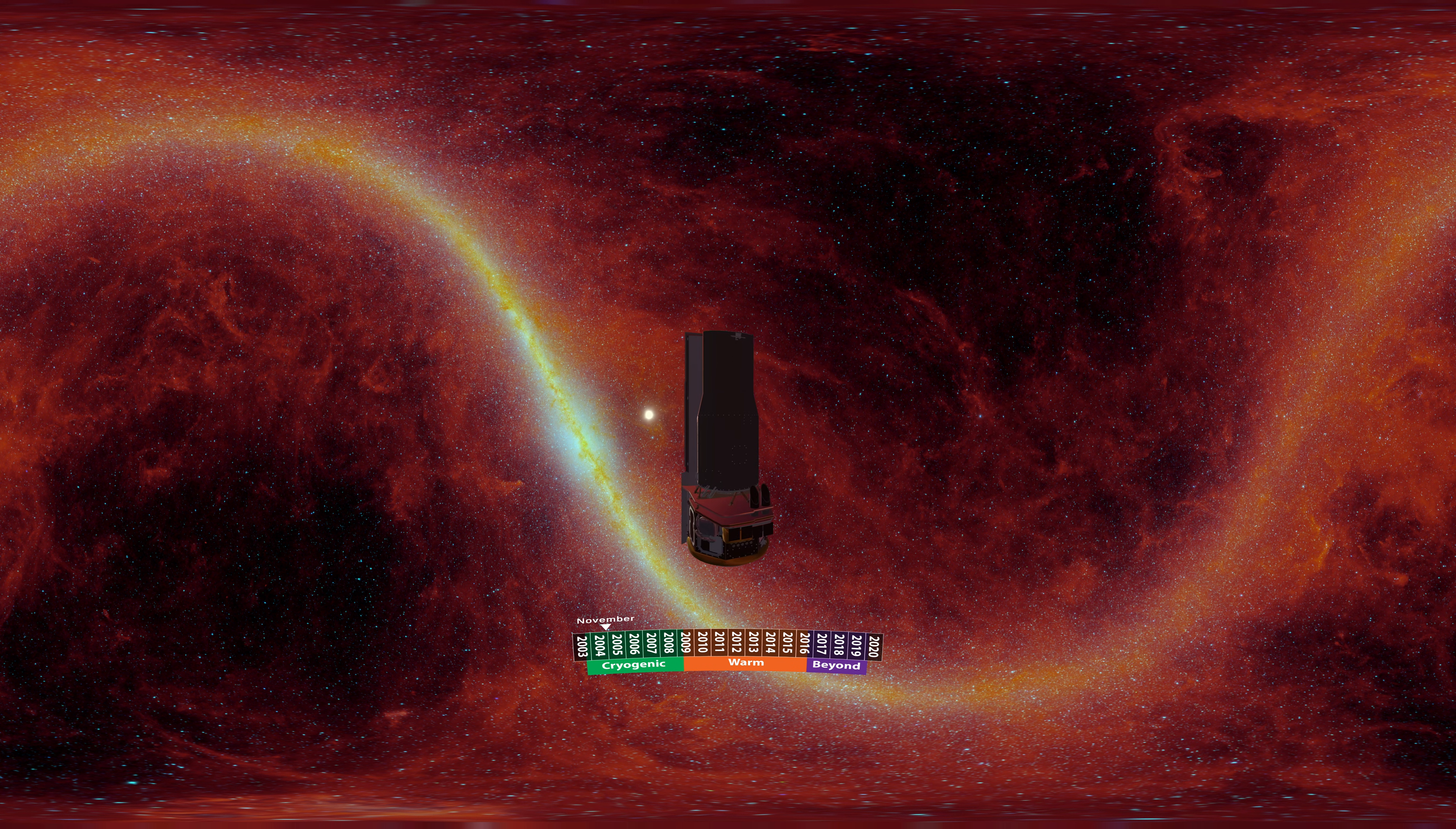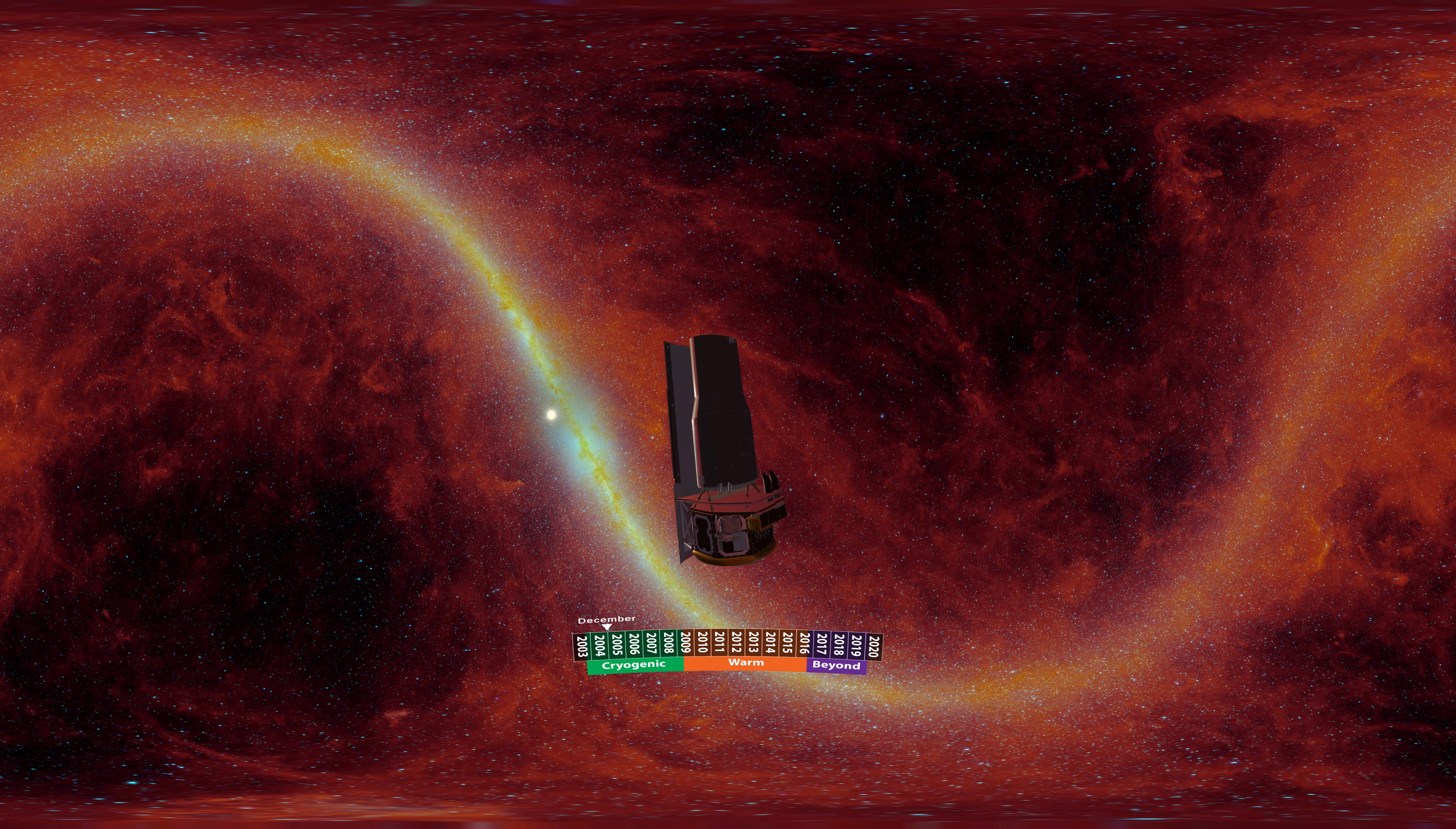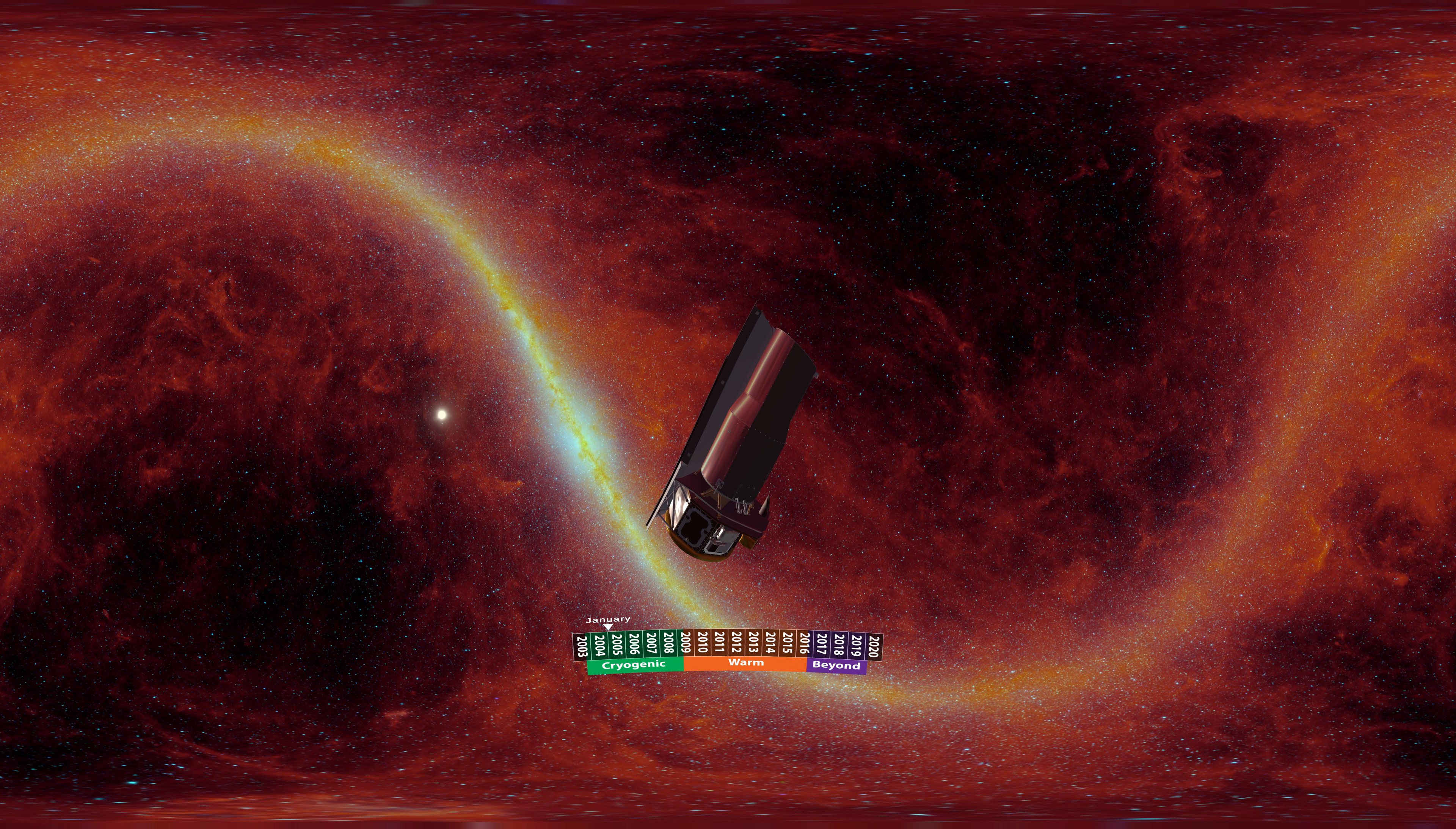This constrained where Spitzer could point in the sky. If it tilted more than 10 degrees toward the sun, then light would spill into the barrel, heating it up. If it tilted more than 30 degrees away from the sun, it would lose critical power from the solar panels. But within those limits, it could pivot in any direction.